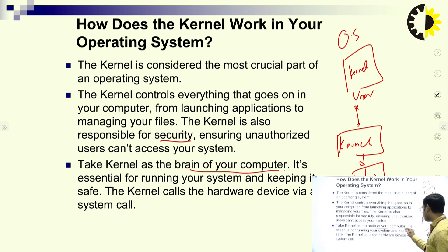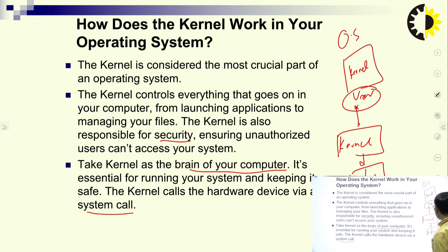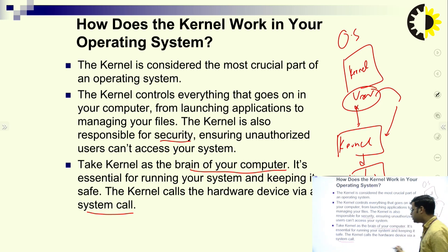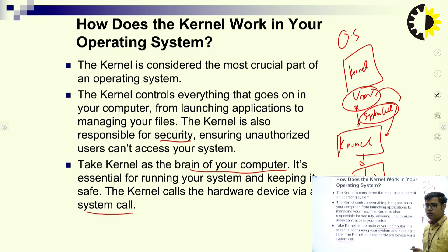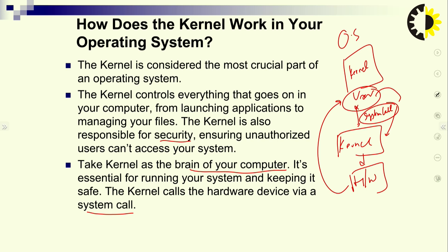Take the kernel as the brain of your computer — it is essential for running your system and keeping it safe. The kernel calls hardware devices via system calls. The kernel is an interface between the user and hardware. When a user requests access to hardware functionality, they interact through system calls. Through the system call, the user can request service to the kernel, and the kernel provides the hardware functionality to the user. System calls act as an intermediary between the user or application program and the kernel.